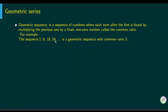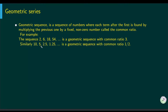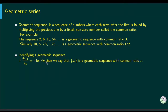This pattern continues infinitely: 54 multiplied by 3, and so on. Another example is 10, 5, 2.5, where you multiply each term by one-half to get the next term. To identify a geometric sequence, divide any term by the previous term — if you get the same ratio for all terms, it is a geometric sequence with common ratio r.